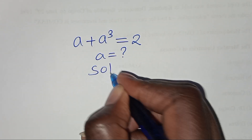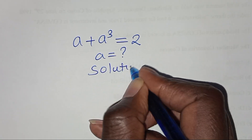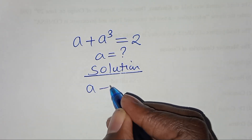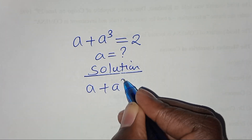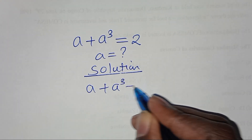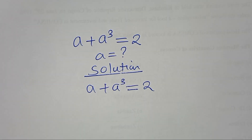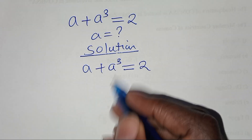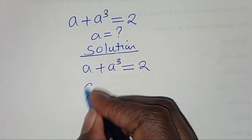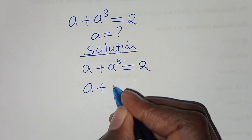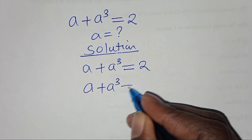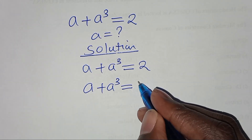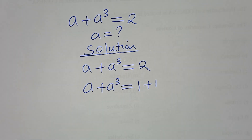Now, solution here. We have a plus a to the power 3, this is equal to 2. This is the same thing as a plus a to the power 3 equals — we can express 2 as 1 plus 1.